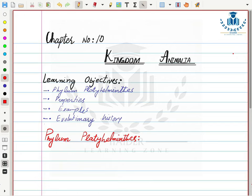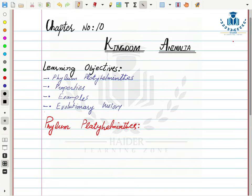Today we will discuss the third phylum of invertebrates, that is Phylum Platyhelminthes. In this lecture we will discuss about properties, examples, and evolutionary history of Phylum Platyhelminthes. The organisms included in this phylum are also commonly called flatworms.